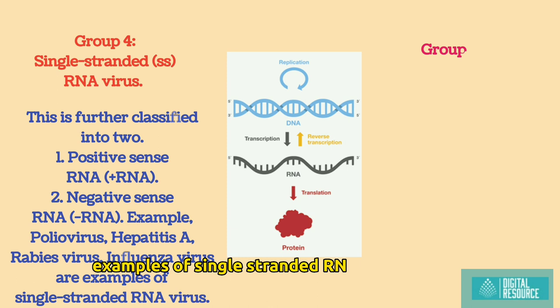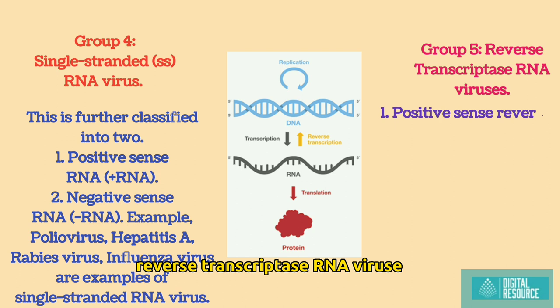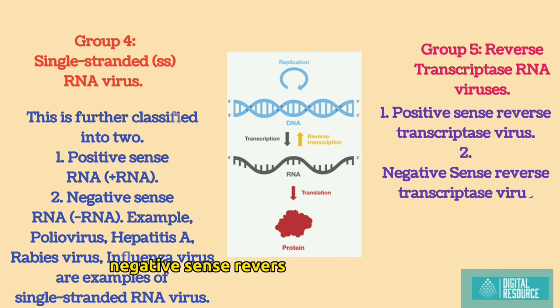Group 5: reverse transcriptase RNA viruses. 1. Positive sense reverse transcriptase virus. 2. Negative sense reverse transcriptase virus. Example: HIV, AIDS, human lymphotrophic virus.